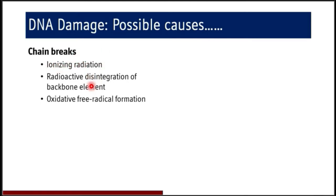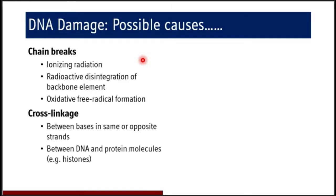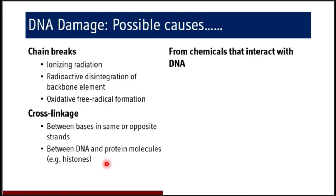Cross-linkages are seen between bases in the same or opposite strands, or between DNA and DNA-protein molecules like histones. Because of these cross-linkages, replication and other processes like transcription are affected and cannot continue. DNA damage can also be caused by chemicals that interact with DNA.